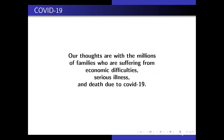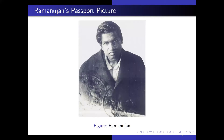Probably most of you in the audience have had friends or family suffering from the COVID virus. This is one of the four photographs we have of Ramanujan — the most famous one, procured from Janaki, Ramanujan's widow, in 1936 by Chandrasekar for the purpose of putting this photo in Hardy's book, Ramanujan. If you recall that book, the passport stamps do not appear in that picture; they were removed.